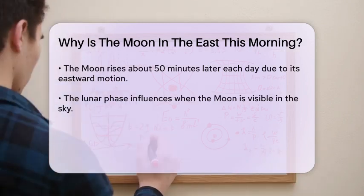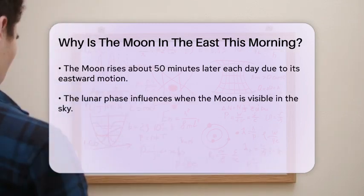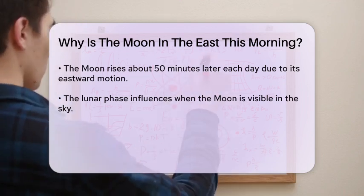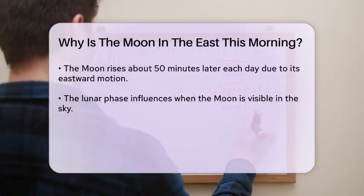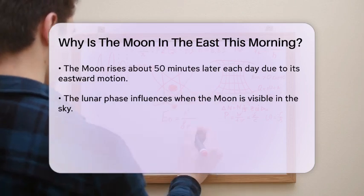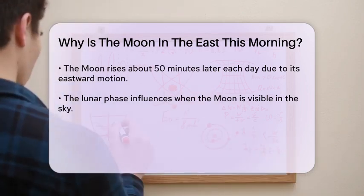The lunar phase also plays a role in when the moon is visible. For example, during the waxing crescent phase, the moon rises in the late morning to early afternoon and sets in the late evening to early night.